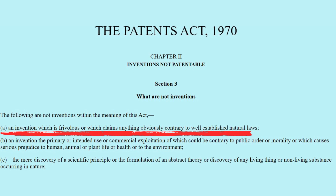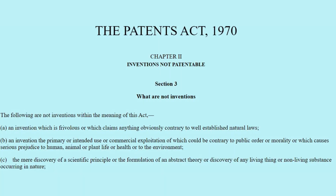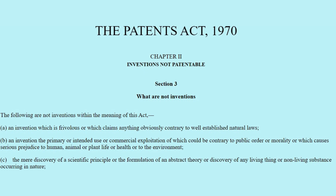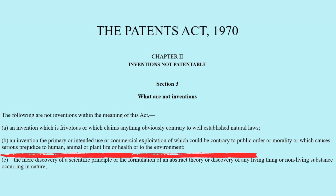Section 3A states that an invention which is frivolous or which claims anything obviously contrary to well-established natural laws is non-patentable. Any invention which challenges the natural laws will come under this subsection. For example, if someone claims that they have made a perpetual motion machine which produces work without any energy input, then this is contrary to the law of thermodynamics — energy can neither be created nor destroyed; it simply changes from one form to another.